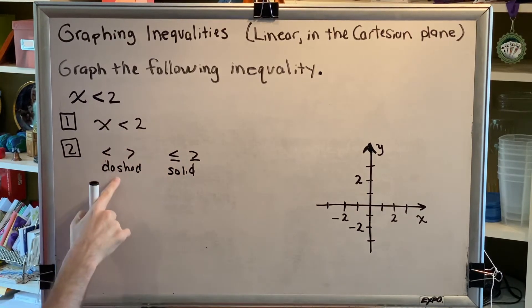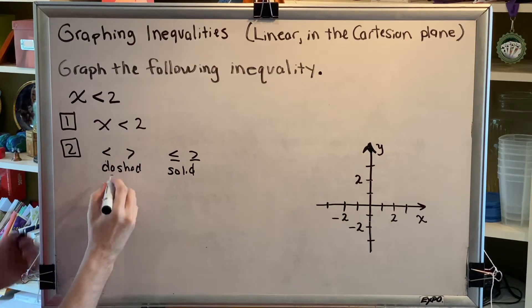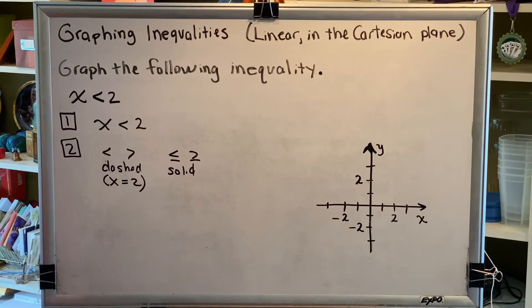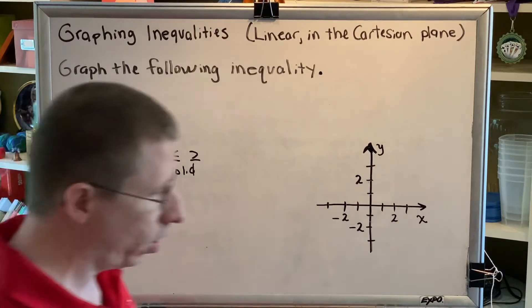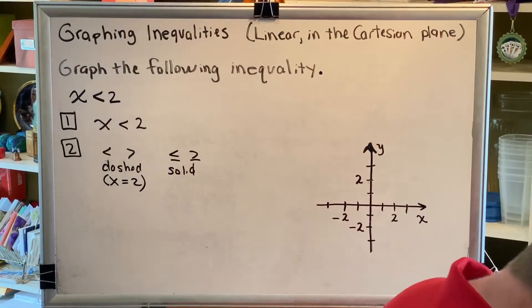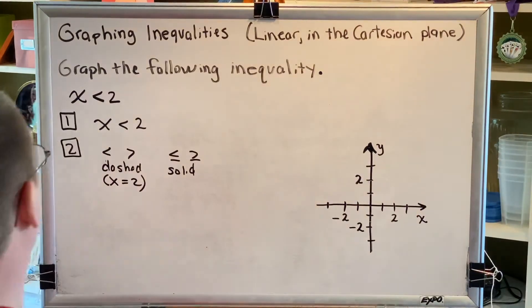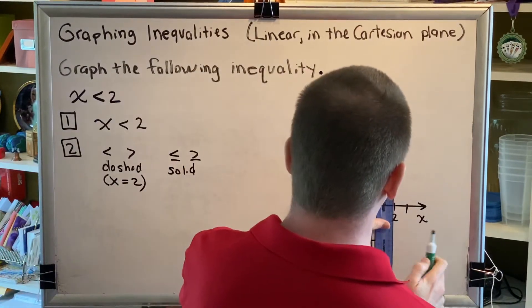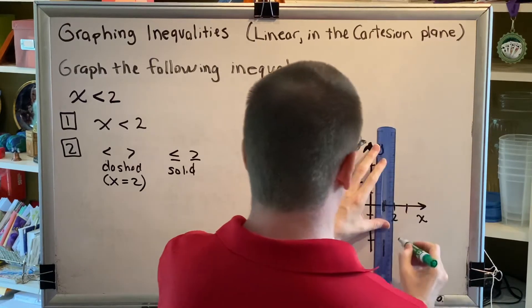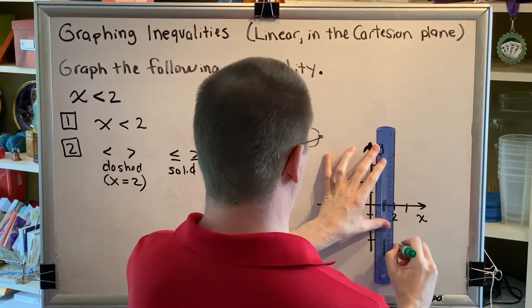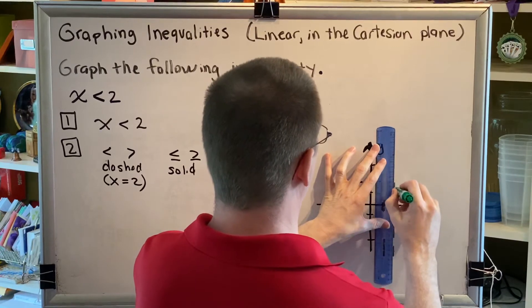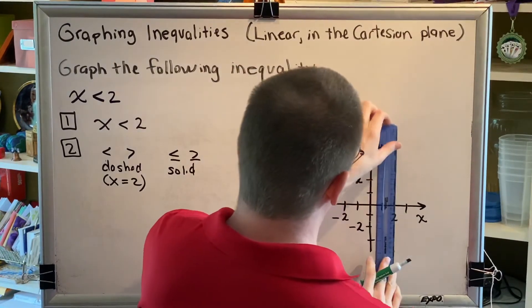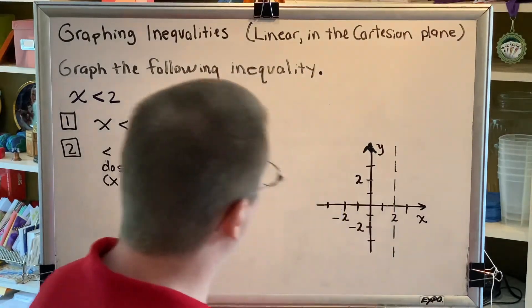Well, we have the less than symbol, so we're going to graph a dashed line, and we're going to pretend it says equals. Well, x equals 2 is a vertical line, so we're going to draw a vertical dashed line at 2. All right, there we go. We've drawn our line.